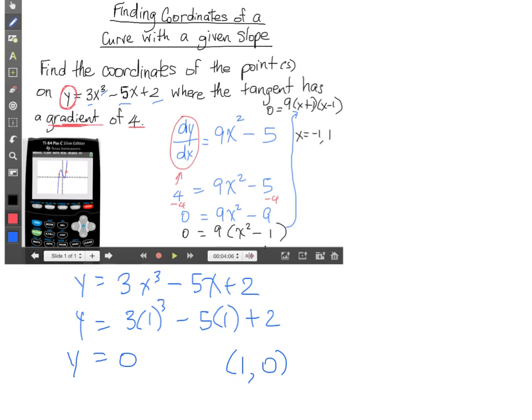Alright, and then there is one more because there is one more x value. So as you can see here, x can also be negative 1. So we can go ahead and plug negative 1 into our y equals equation to figure out what y is equal to. So again, I'm just going to rewrite that original equation, which is y equals 3x to the third minus 5x plus 2. And this time, we're going to see what y is when x is equal to negative 1. So negative 1 to the third minus 5 times negative 1 plus 2. And when you plug that all in, you get that y is equal to 4. So the second set of coordinates with a slope of 4 is negative 1 and comma 4.